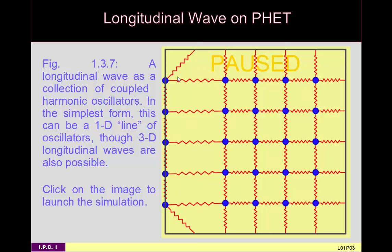This simulation from the Colorado physics education team shows a series of coupled oscillators: red springs and blue masses. You can set up a longitudinal oscillation by pulling a line of masses to one edge and releasing. They all move together, compressing the spring to the maximum, then the spring stretches back, and you get a compression here and a stretch there. That's how you get propagation of this wave.